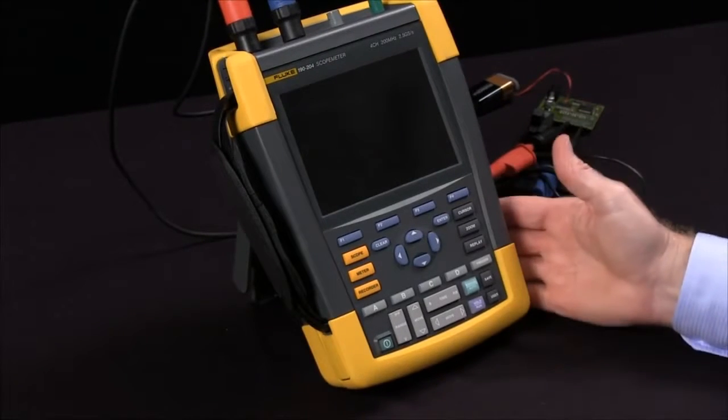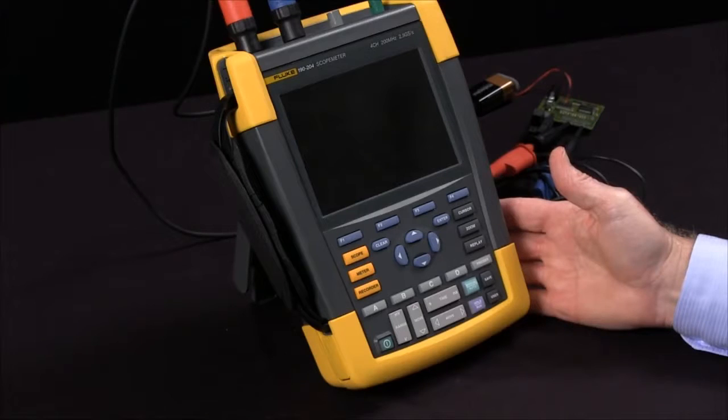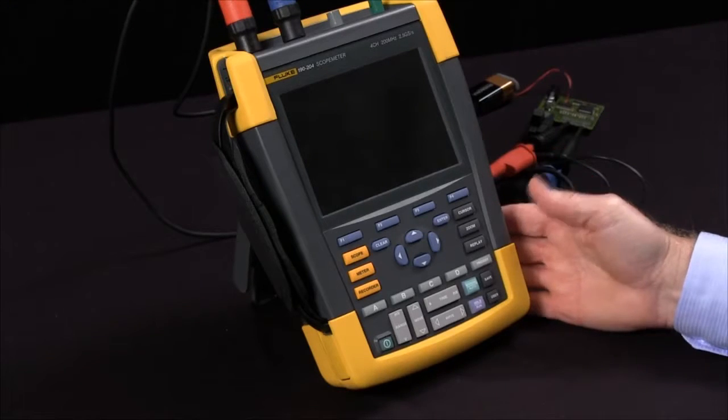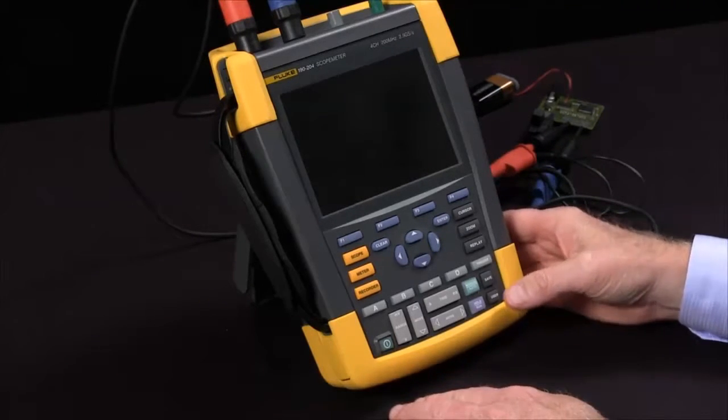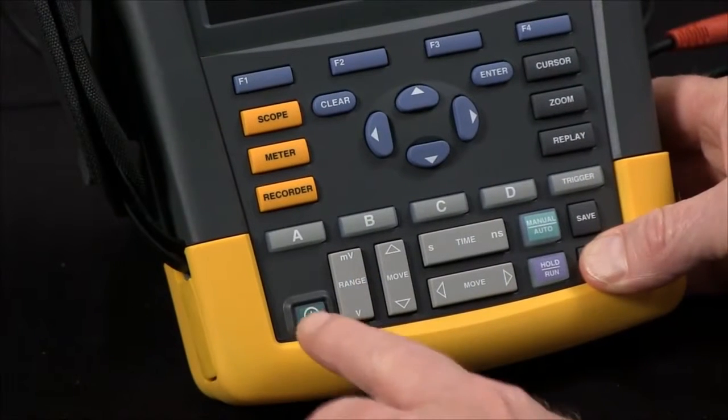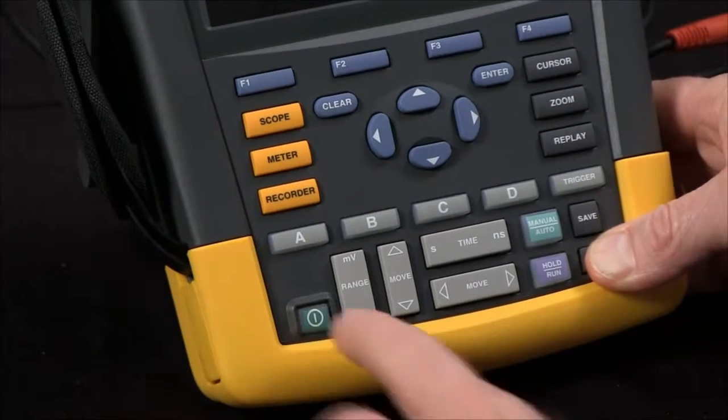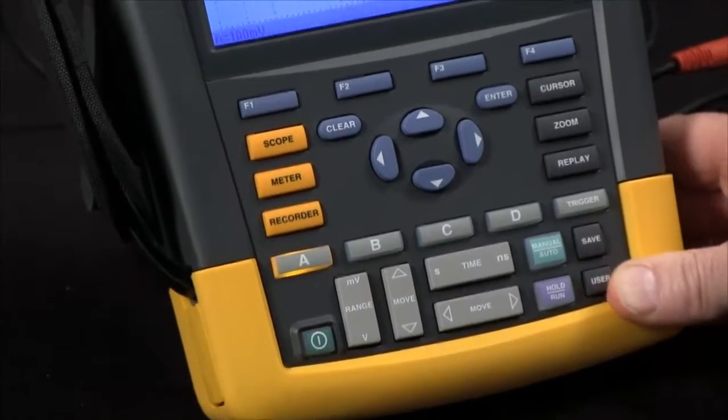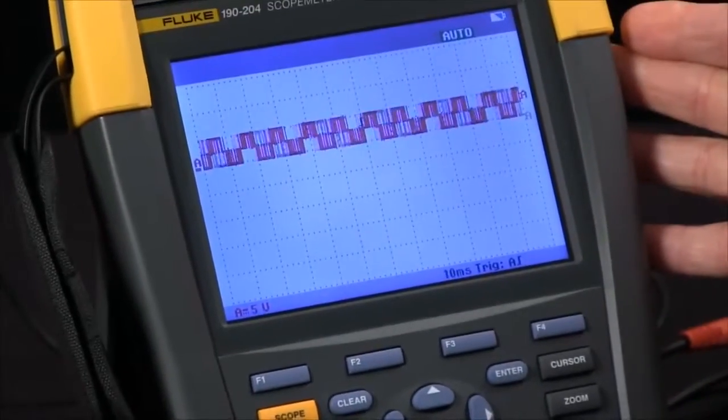In this video we're going to talk about how to reset the scope meter and just some basic setup. We'll start by holding down the user key as we press and release the power button. The unit will beep twice and come up with factory default settings.